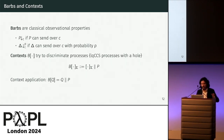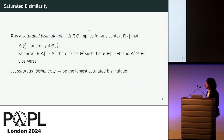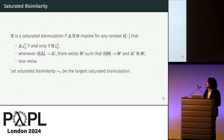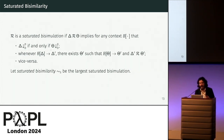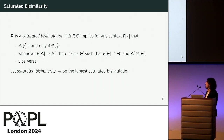For the notion of barb bisimulation — to be precise, a saturated barb bisimulation — it is a relation such that when we have two distributions, they must exhibit the same barb with the same probabilities, and after one step inside the same context, for any possible context, they still remain barb bisimilar. The bisimilarity is just the largest such simulation.